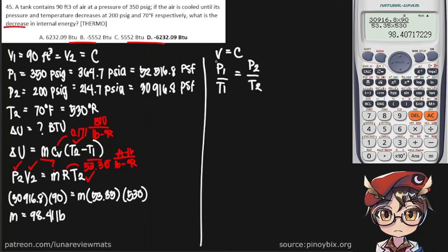Which is simply P1 over T1 is equal to P2 over T2. And we have everything here. P1 is right here. P2 is right here. And of course, T2 is right here. So we can get our T1.